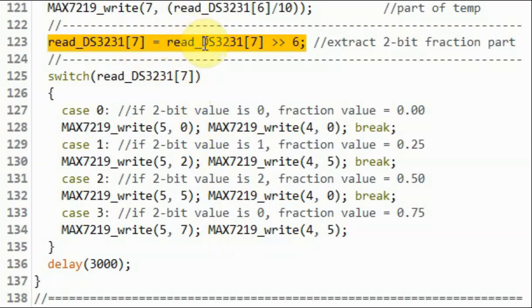Next, we extract the 2-bit fraction part of temperature. And using this switch statement, if the 2-bit value is 0, then we will display the fractional value of .00. If the 2-bit value is 1, then we display .25.